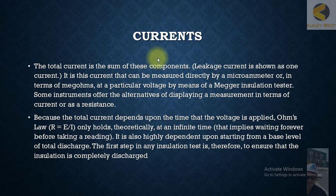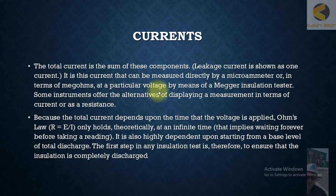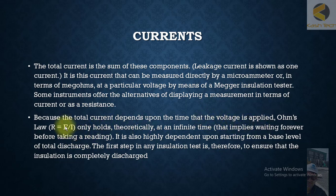We will now discuss the different types of leakage currents. The total current is the sum of these currents. Leakage current can be measured directly by a microammeter, or in terms of mega-ohms at a particular voltage using a megohm insulation tester. Some instruments offer the alternative of displaying a measurement in terms of current or as a resistance. Because the total current depends upon the time that voltage is applied, Ohm's law — R equals applied voltage divided by leakage current — only holds theoretically at infinite time.